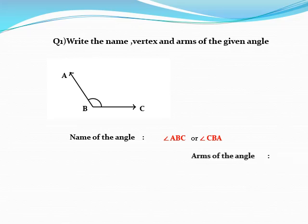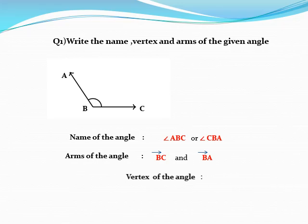The arms of the angle are ray BC and ray BA. B is the vertex of the angle.